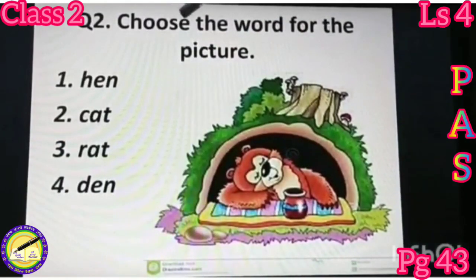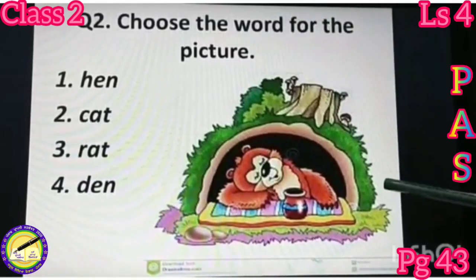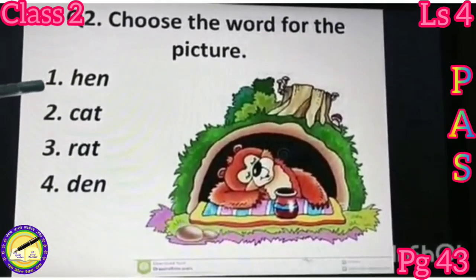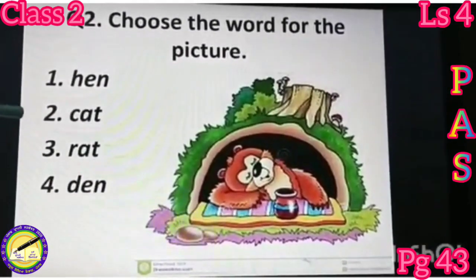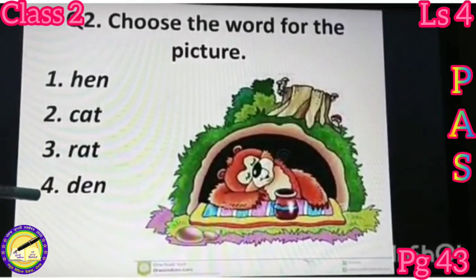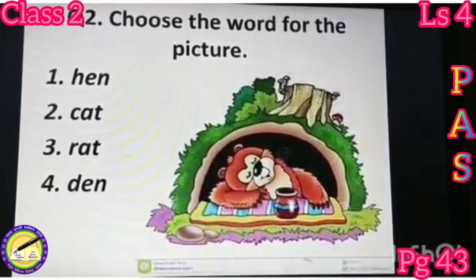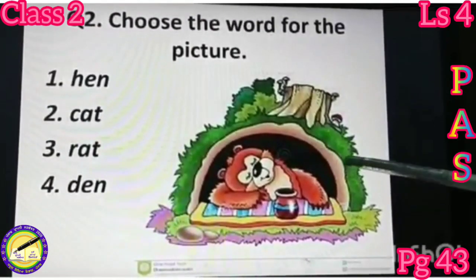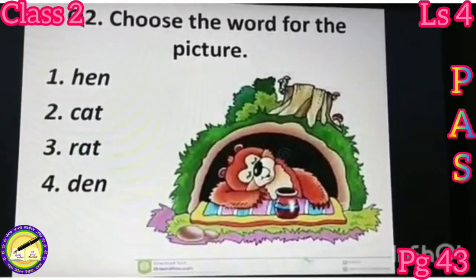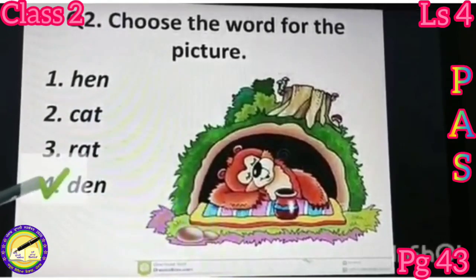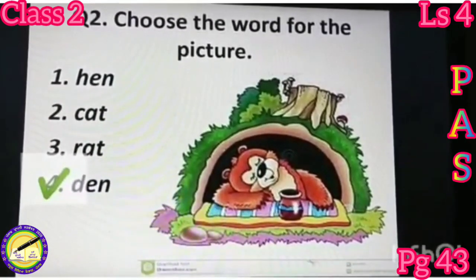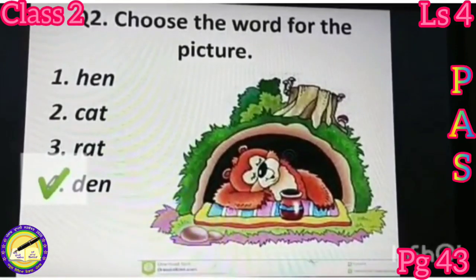Question number two: choose the word for the picture. One picture and four options are here — H-E-N, C-A-T, R-A-T, B-E-N. What does this picture show? It is a picture of ten. And where is ten? At the fourth option. So the fourth one is the correct option. Put a tick on it. That's all for today. Hope you have enjoyed the activity. Thank you.